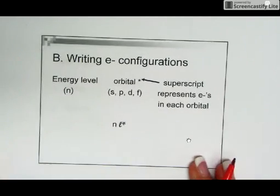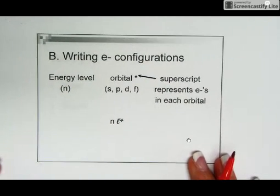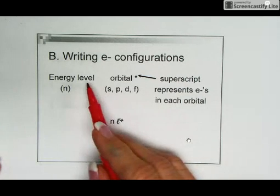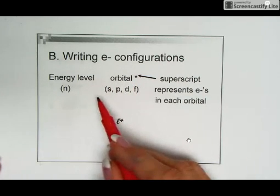Today we learned how to write electron configurations. What electron configurations does is it shows us where all the electrons are located in your atom.